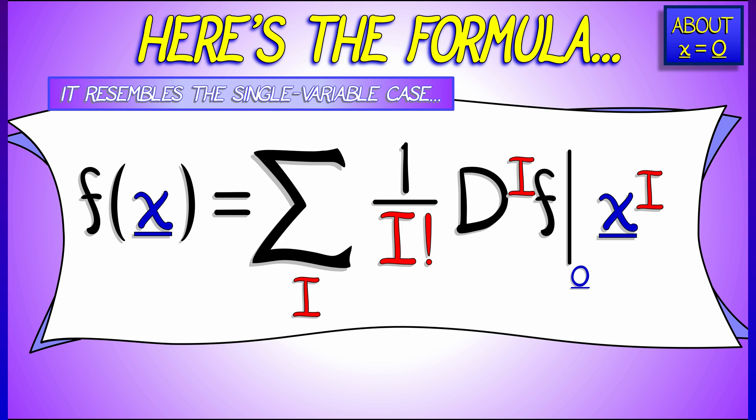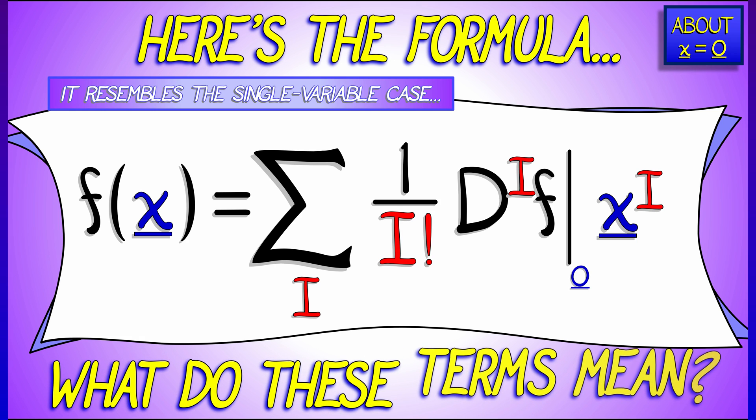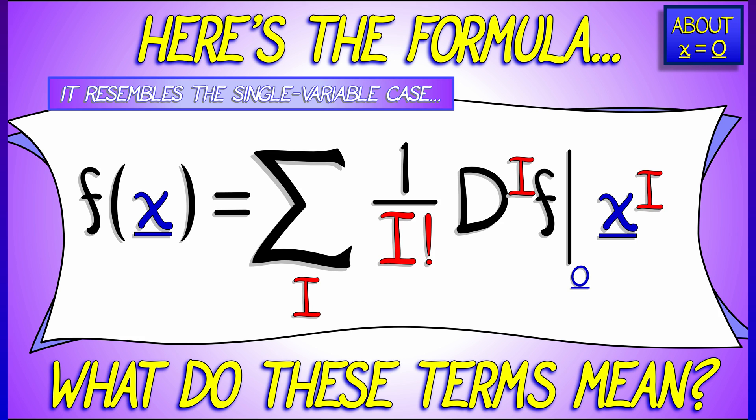It is morphologically similar to the standard single variable, but all these terms, all this notation. What does it really mean?